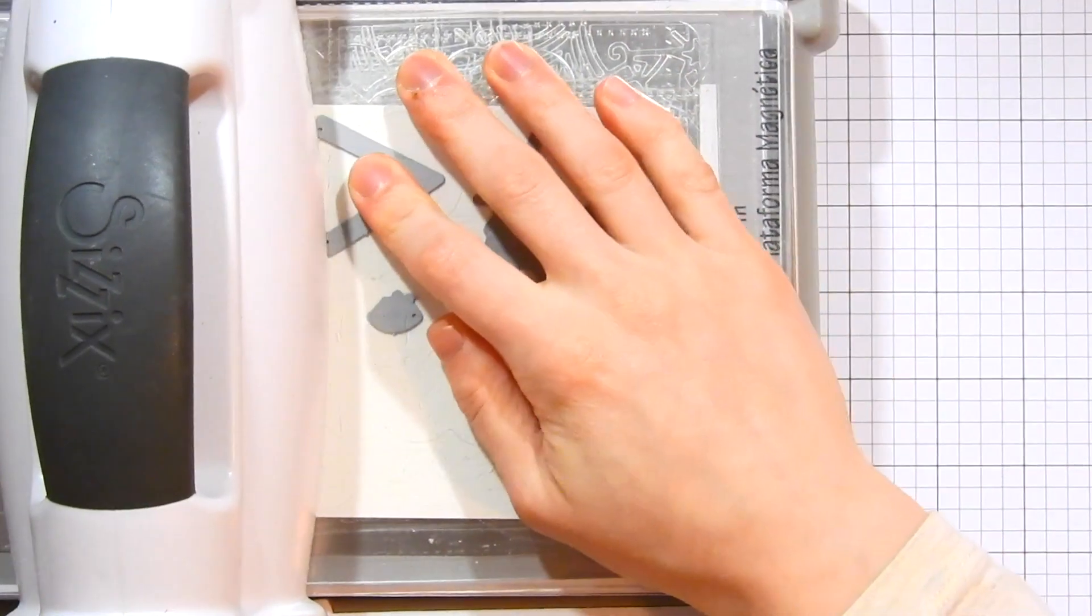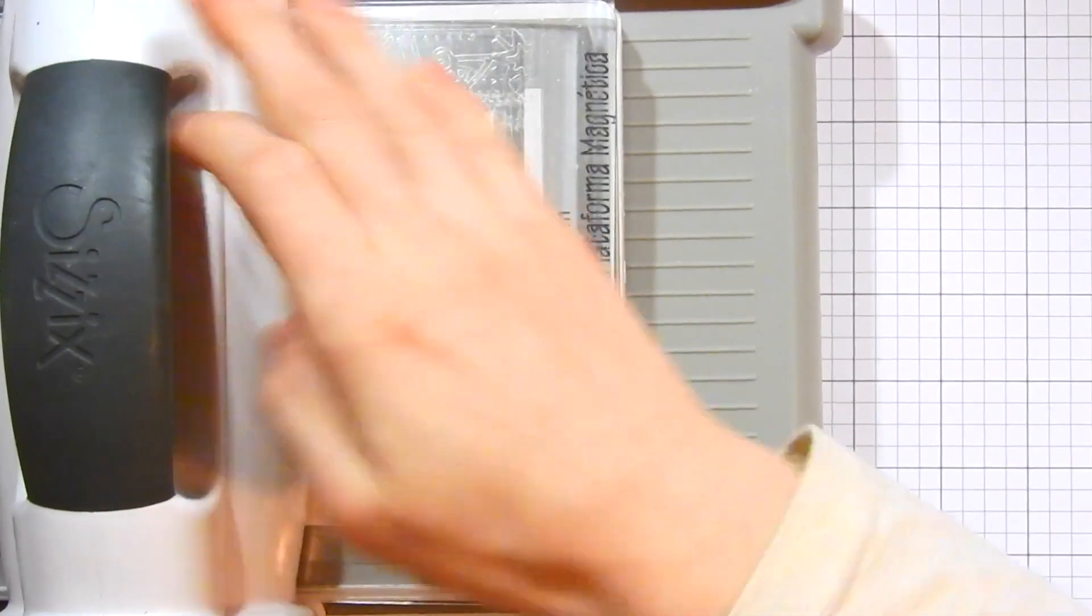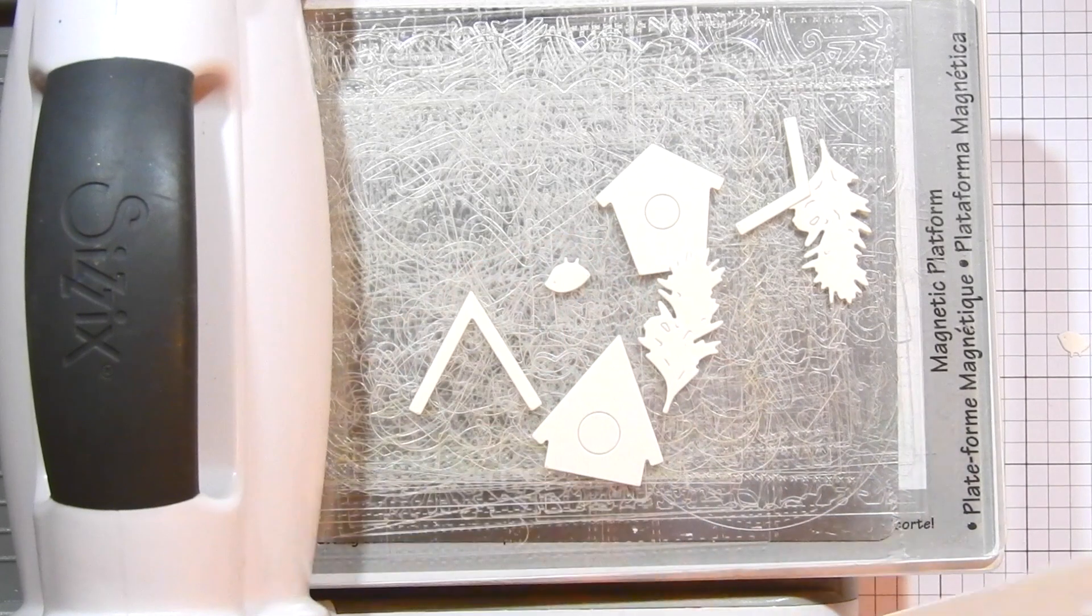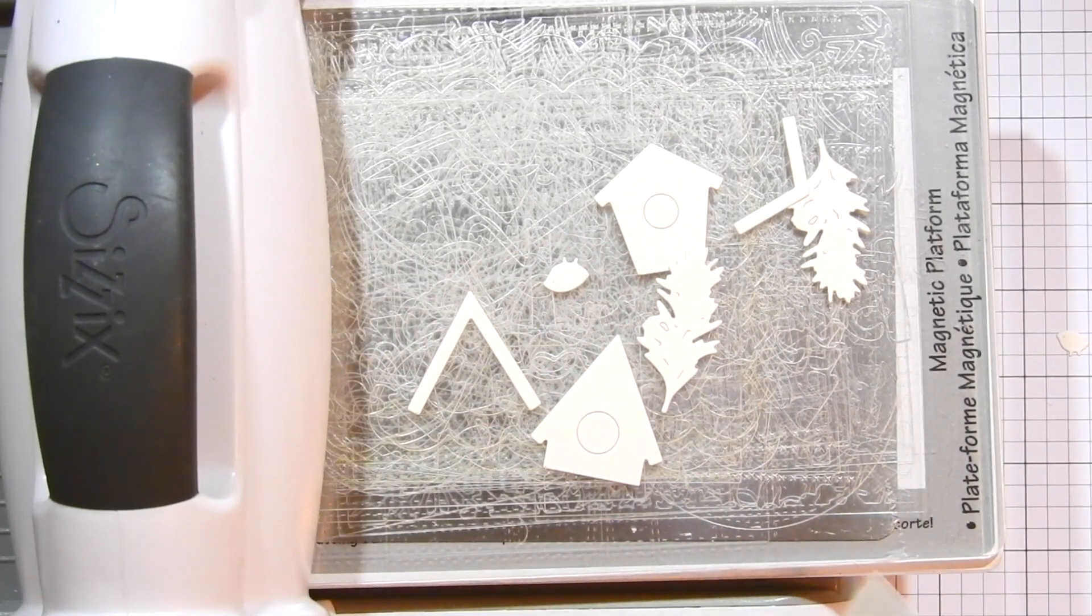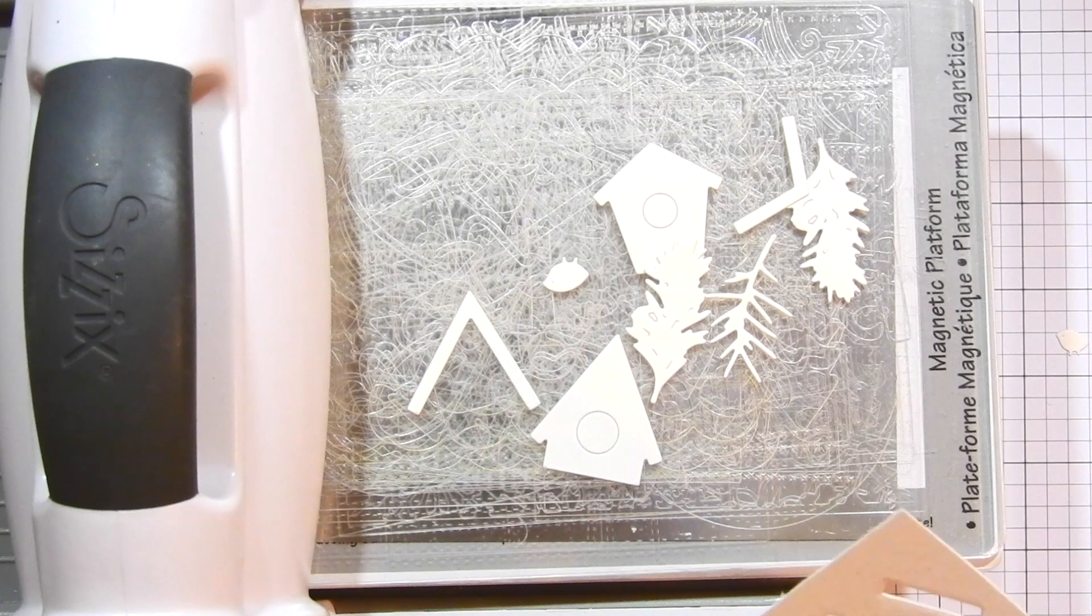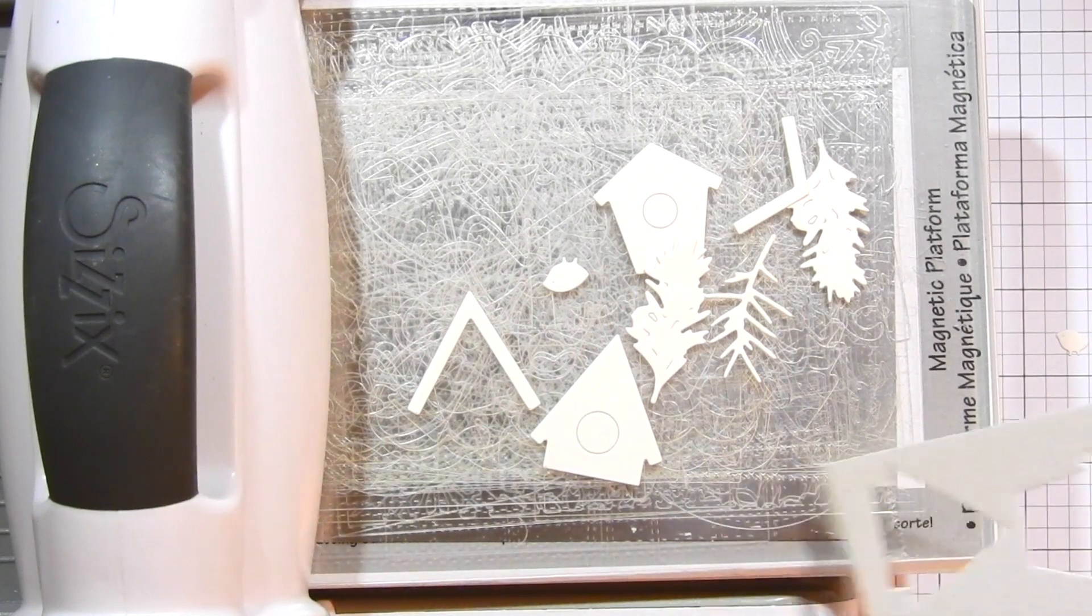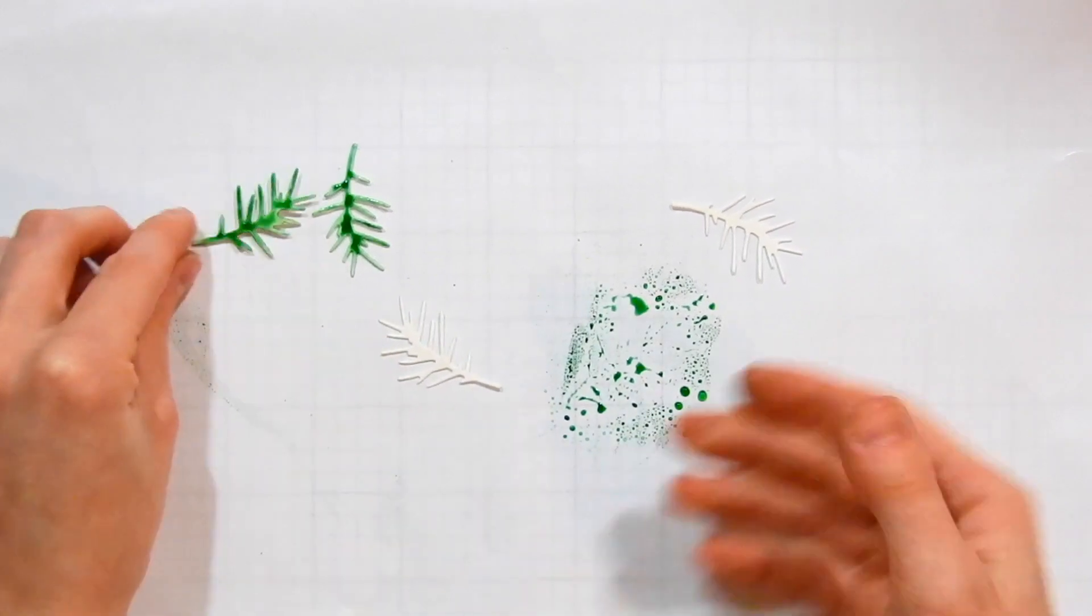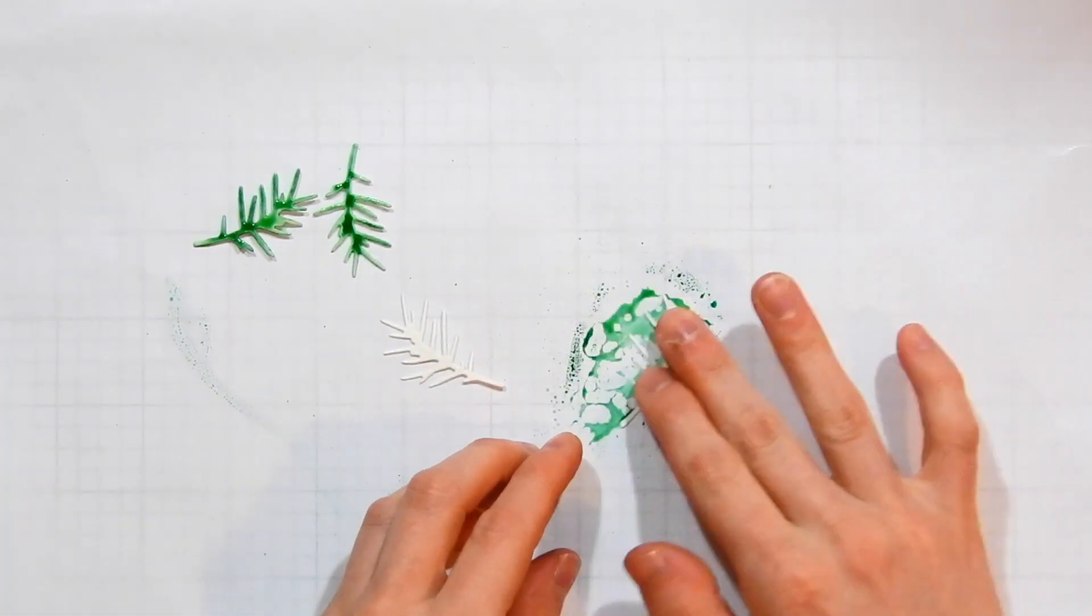Now I'm cutting them from watercolor paper because we're going to be doing a watercoloring technique, so I've chosen some Canson XL watercolor paper. I've chosen this one in particular because it really works well with Zig Clean Color markers. All right, so I'm popping out all the dies from the paper. You can see we've got some pine boughs, we've also got the birdhouses and the birds.